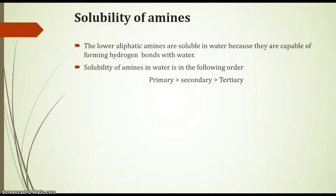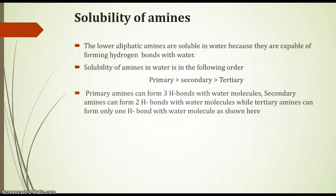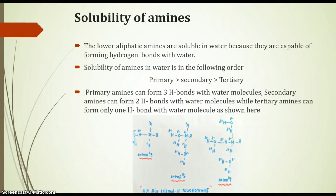What is the reason behind this order? Primary amines can form three hydrogen bonds with water molecules, secondary amines can form two hydrogen bonds with water molecules, while tertiary amines can only form one hydrogen bond with water molecules, as shown in the diagram. Primary amines form three hydrogen bonds with three water molecules, secondary amines form two hydrogen bonds with two water molecules, and tertiary amines can only form one hydrogen bond with a water molecule.